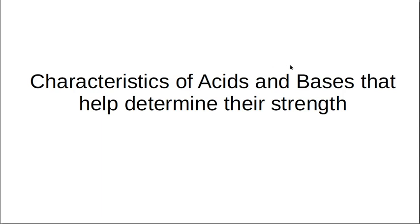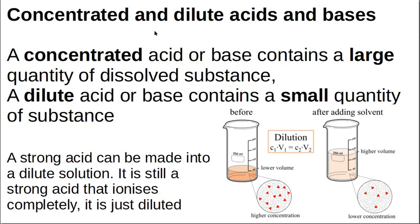Let's talk about the strength of acids. Always remember there's a difference between concentration and strength of an acid. If it's a concentrated acid, there's a large quantity of dissolved acid or dissolved base. If it's a dilute acid, there's a small quantity. Think of it like Oros — concentrated Oros or weak Oros — and this has nothing to do with the strength of the acid.